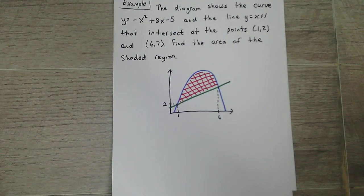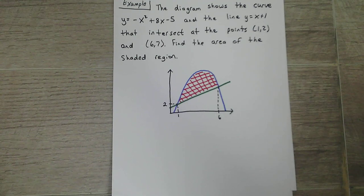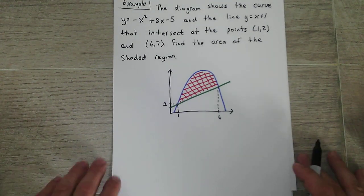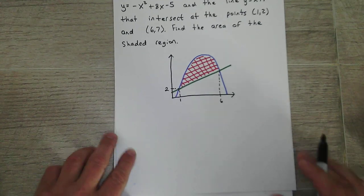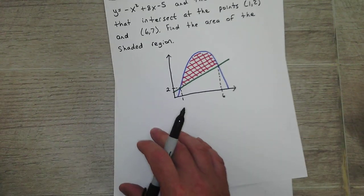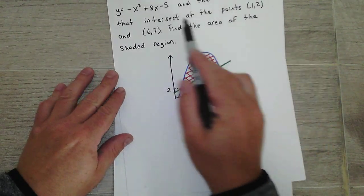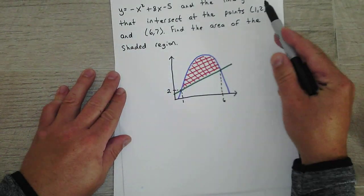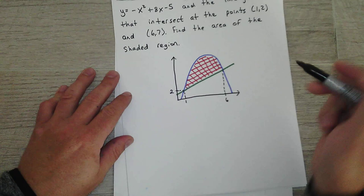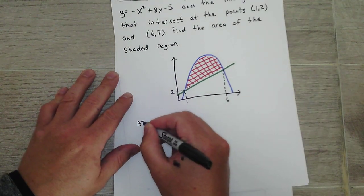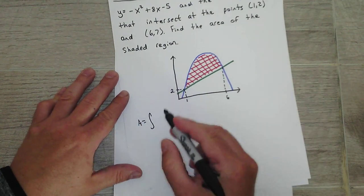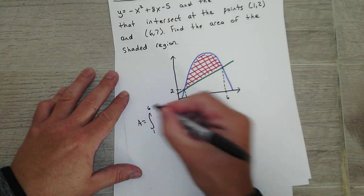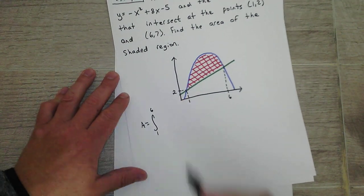Okay, so using the formula that I just gave you, I'm not going to write the formula down. Basically the blue is my f of x, the green is my g of x. So the area, we're going to go... your x values from 1 to 6. So I'm going to do...